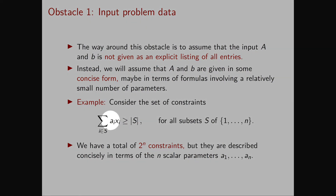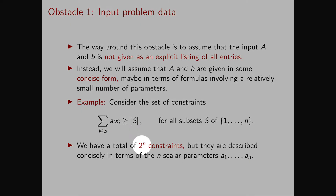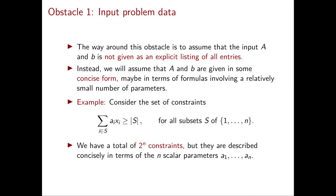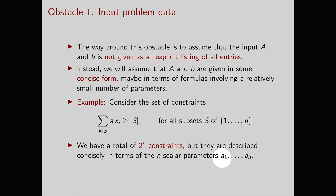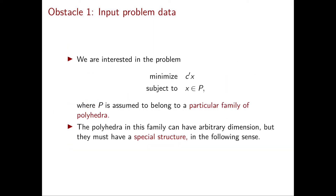Consider the following set of constraints: the sum of A_i X_i for i in S is greater than or equal to the cardinality of S. We consider this inequality for all subsets S of {1 to n}. So in total, this system contains 2 to the n constraints. However, I am able to give them to you in a very concise form — everything I need to tell you is their form and I need to give you the n scalars A_1 until A_n.